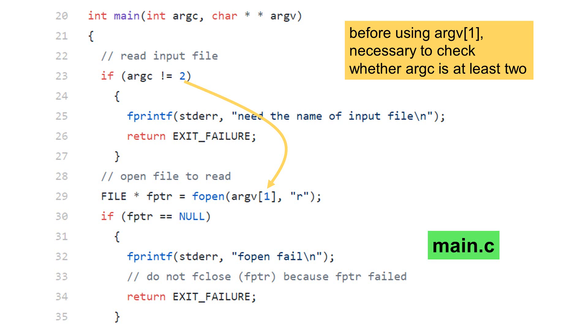Many reasons can make fopen fail. For example, if the file does not exist, then fopen fails. Even if the file exists, it is possible this program has no permission to read this file. In that case, fopen also fails.